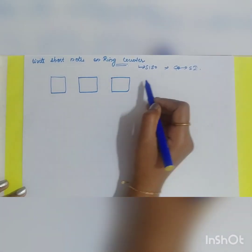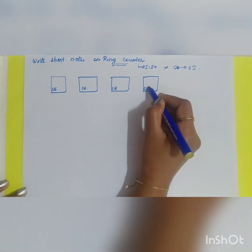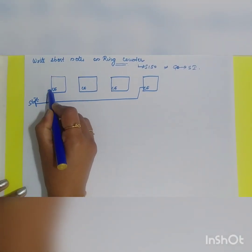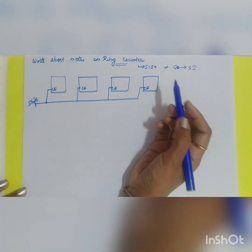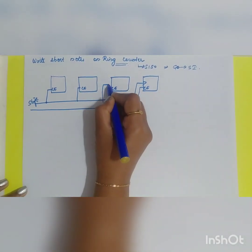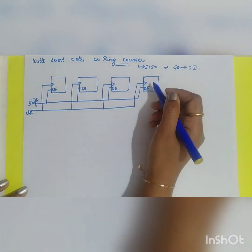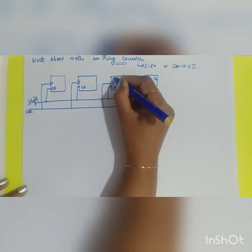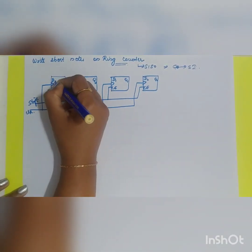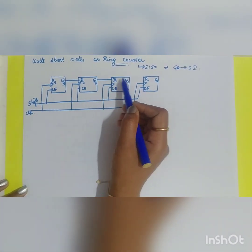So you have four flip-flops with a clock enable signal, to which the connection was given from the shift register. You had a clock signal which was triggered during the positive edge. The data input was D0, Q0, D1 — these are D flip-flops — Q1, D2, Q2, D3, Q3.